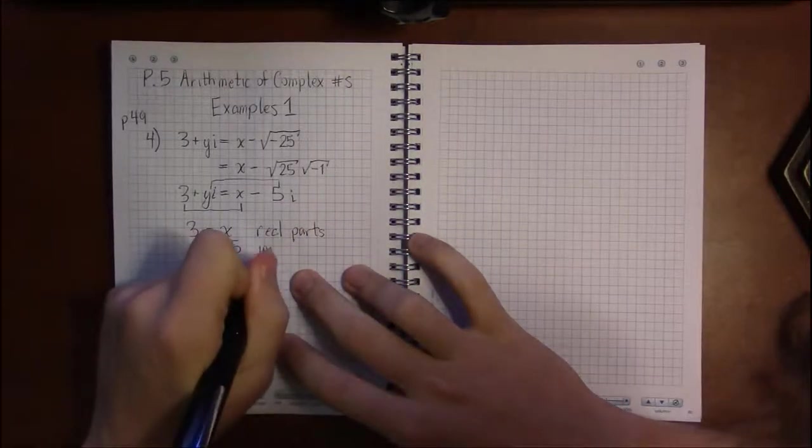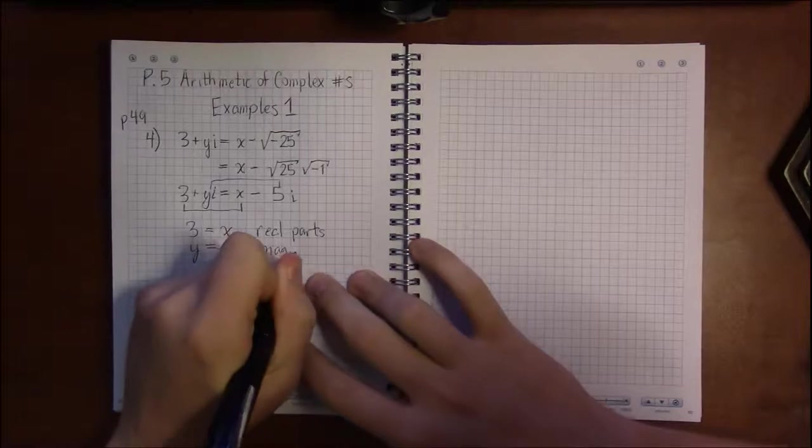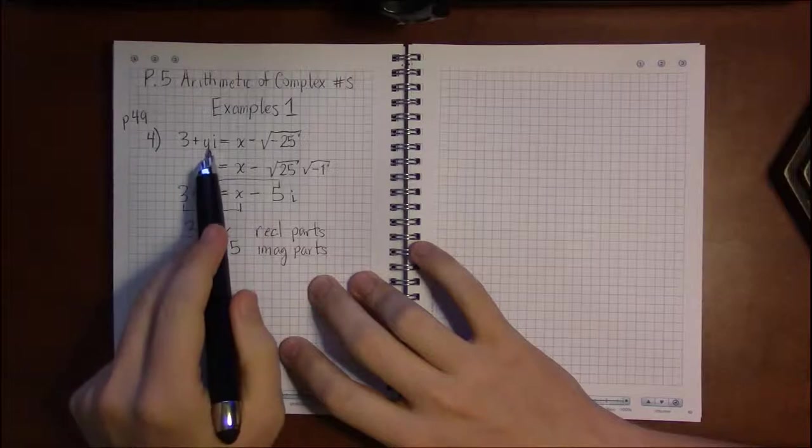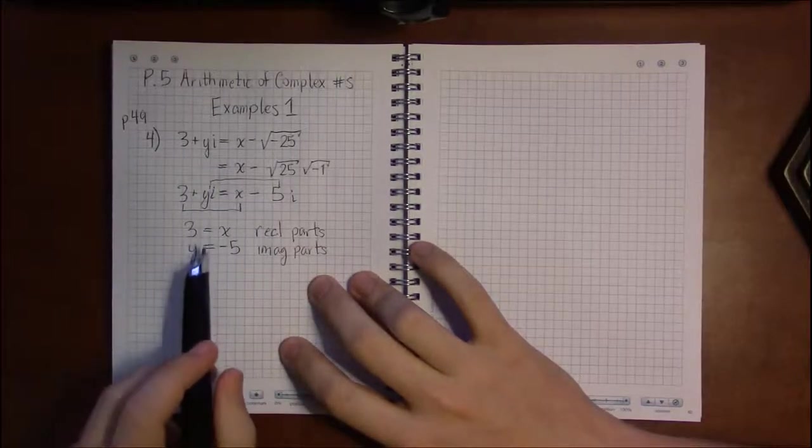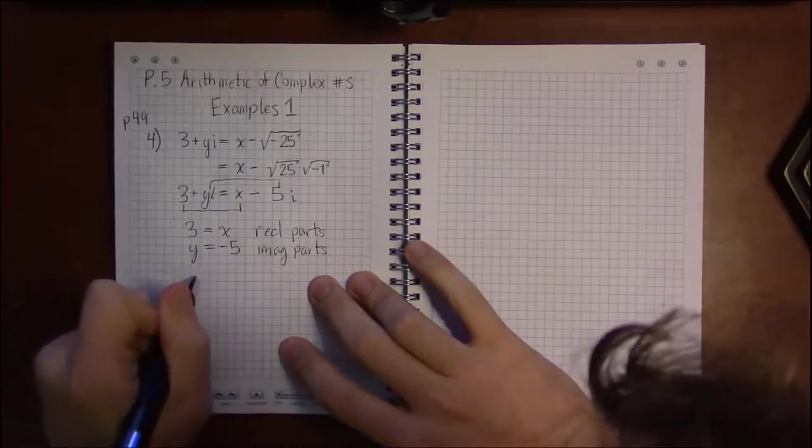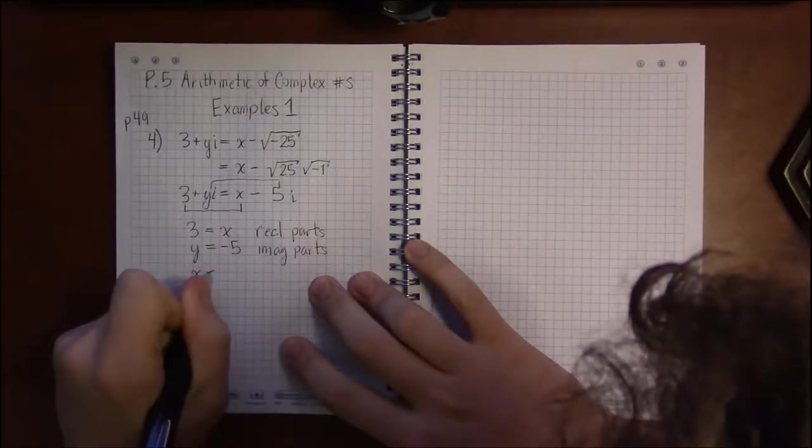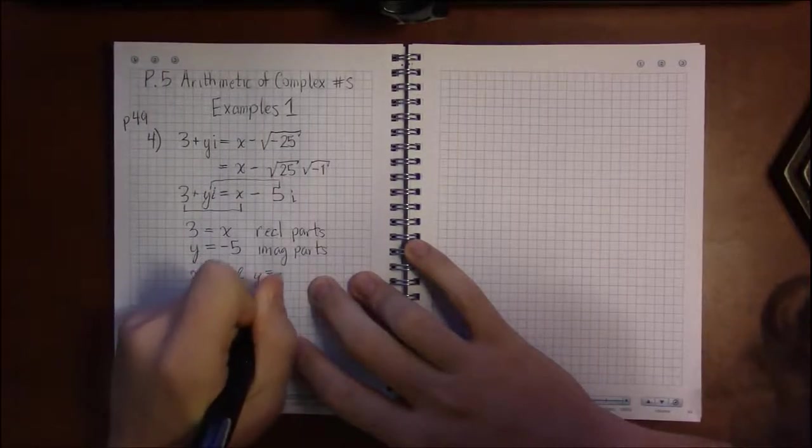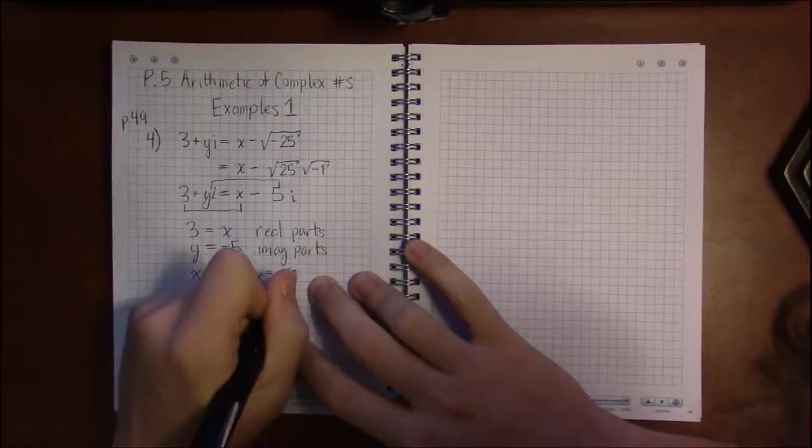This is called the imaginary parts and they too must be equal. So if x and y are real numbers and this equation is true, then it has to be the case that x equals 3 and y equals minus 5.